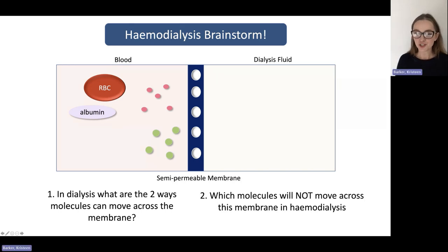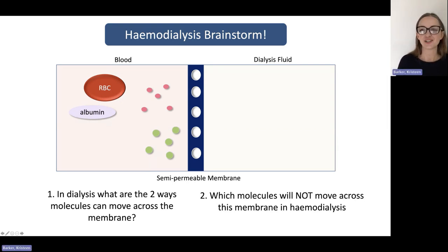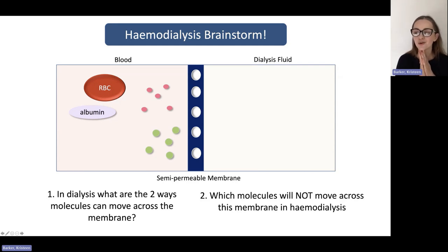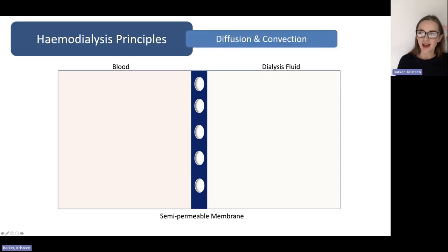Diffusion is one mechanism, and convection is the second option — marvellous. And for bonus points, which of these molecules or substances are not going to move across this membrane in hemodialysis? The molecules that don't move are red blood cells and albumin — exactly. So the cells and the albumin are not going to move. We're just going to unpack that in a little bit more detail.